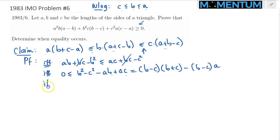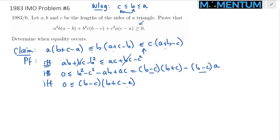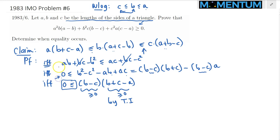So we have 0 ≤ (B−C)(B+C−A). The factor (B−C) is greater than or equal to 0 because B ≥ C, and (B+C−A) is greater than or equal to 0 by the triangle inequality — since ABC are the sides of a triangle. So we have proven that this is ≥ 0, confirming our claim.